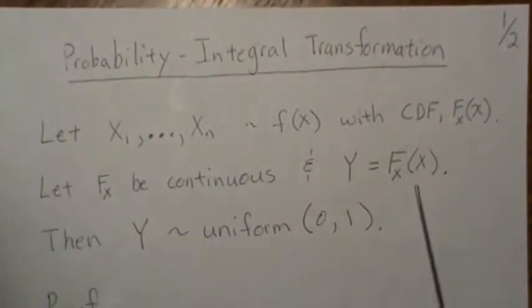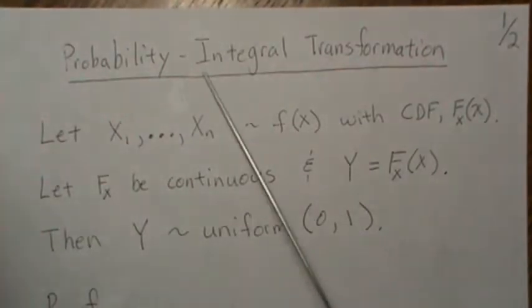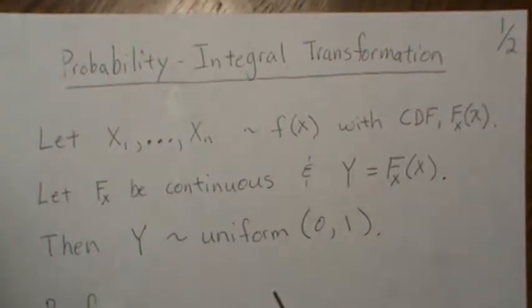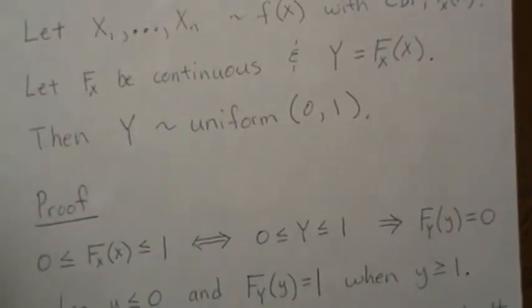If we let Y equal that CDF, then Y is a uniform distribution on 0 to 1. This is used so much in nonparametric statistics that it's worth showing here. Actually, my next video I'm going to show how the Kolmogorov-Smirnov nonparametric test is nonparametric and it relies on this fact here.